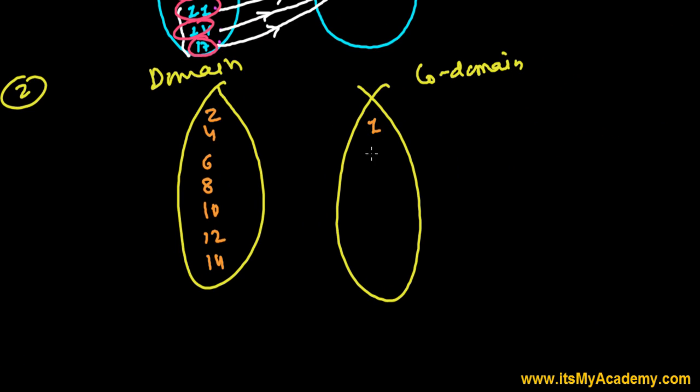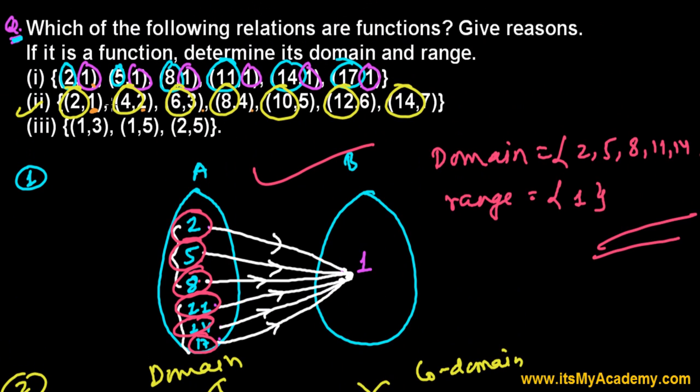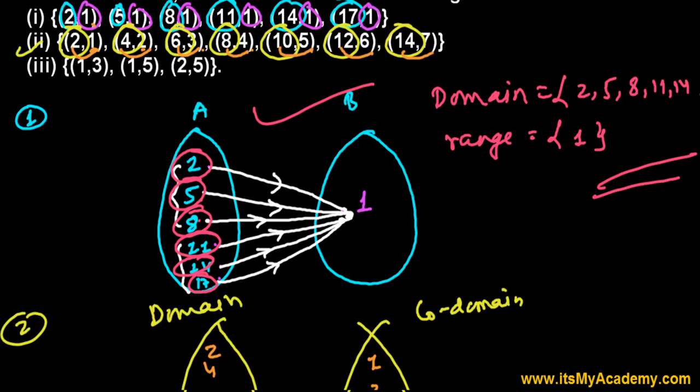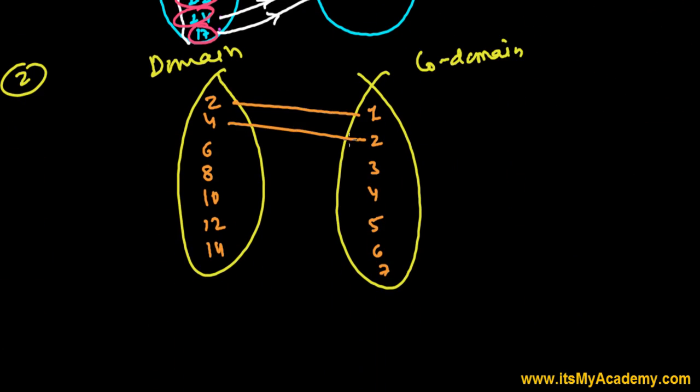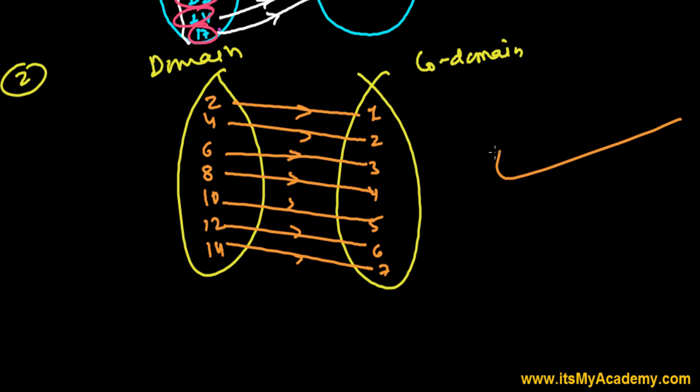And the codomain, the members of codomain or you can say the range, those are actually 1, 2, 3, 4, 5, 6, 7. And they are related like this, you know, just with half. If you see the property 2, 1, 4, 2, just half of this, you know, 6 half, 8 half, 10 half, 12 half, 14 half. So 2 is related with 1, 4 is with 2, 6 with 3, 8 with 4, 10 with 5, 12 with 6, and 14 with 7. Everybody can see easily that this is a function because every element of domain has their unique image in codomain. This is a function. This is one of the simplest function that we have.